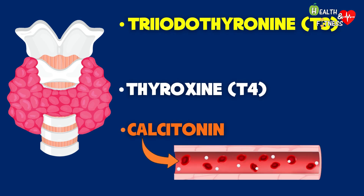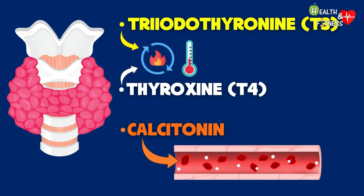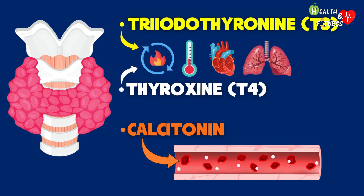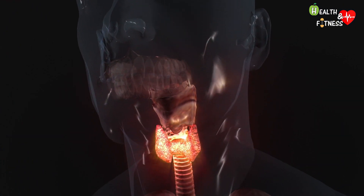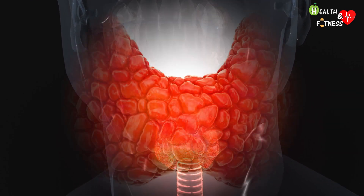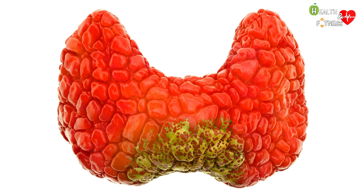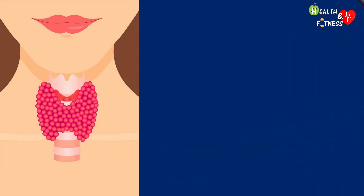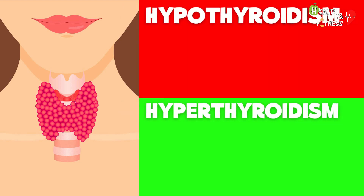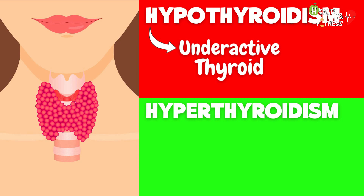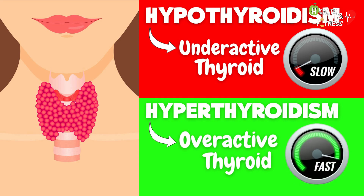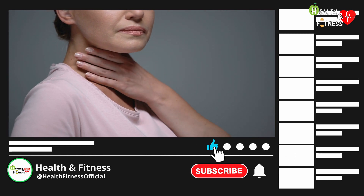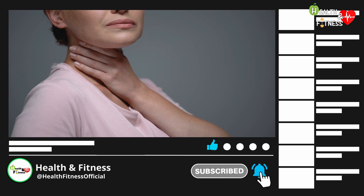Calcitonin is responsible for regulating blood calcium levels, while thyroid hormones T3 and T4 control body metabolism and body temperature, increase cardiac output and respiratory ventilation, and promote brain and skeletal development of the fetus. In the course of life, however, the thyroid gland can undergo various pathological processes: inflammatory such as thyroiditis, autoimmune such as Graves' disease, or tumor-related such as papillary or follicular carcinoma. When the production of thyroid hormones is altered, we speak of hypothyroidism and hyperthyroidism — two opposite pathological conditions that manifest with different symptoms.